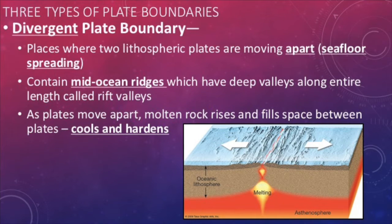We have three major types of plate boundaries. The first of these are divergent boundaries. Divergent plate boundaries occur where convection currents are pushing magma upwards. This pushes the older crust aside and causes the plates to move apart from one another. Divergent boundaries are the sources of mid-ocean ridges under the water and rift valleys on land. They are considered areas of new crust formation.